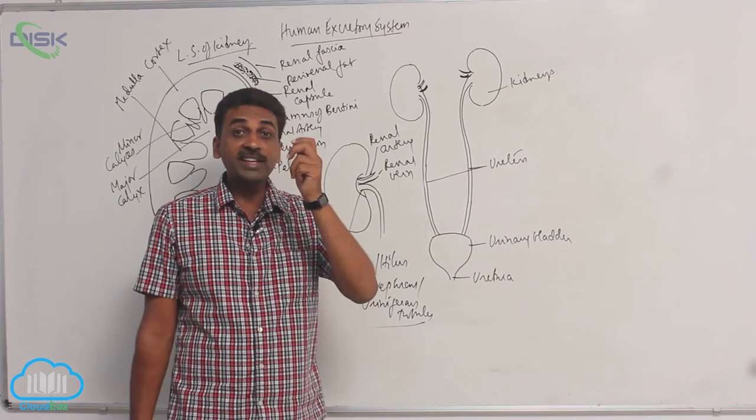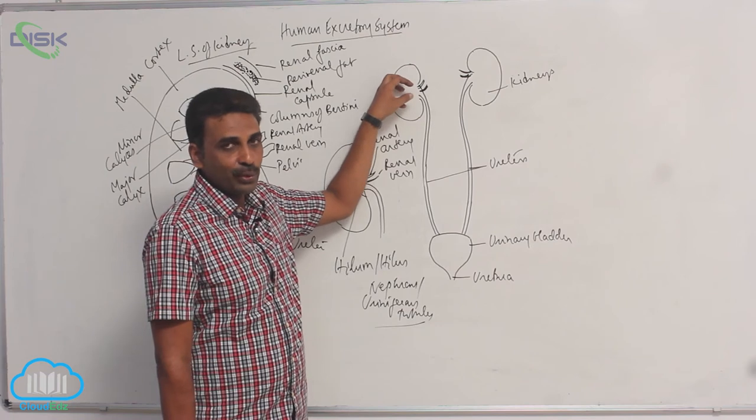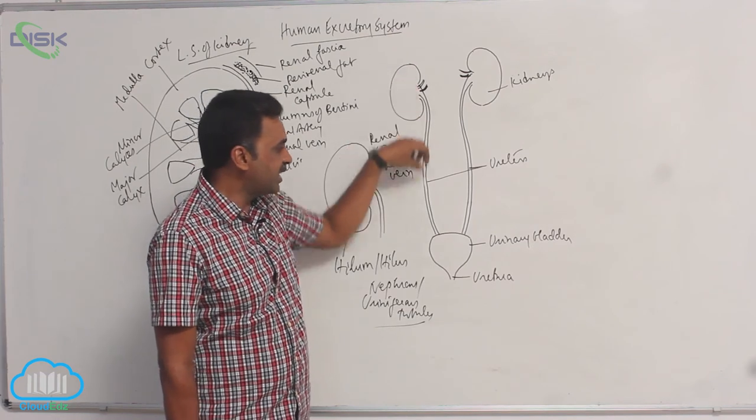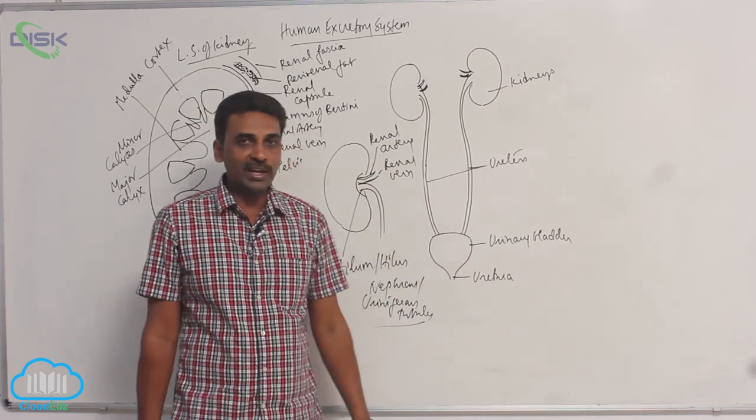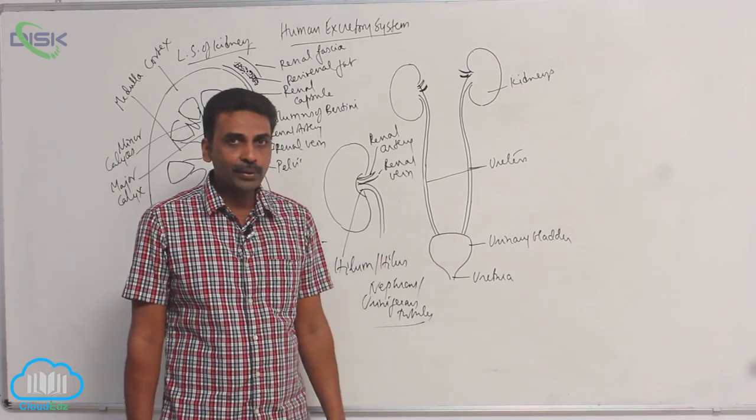The walls contain smooth muscles. So they collect the waste, the urine from kidneys, and they discharge that urine into urinary bladder. Finally, the waste is entering into urinary bladder.